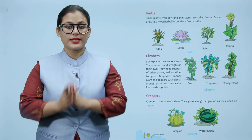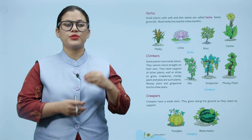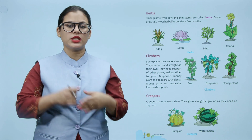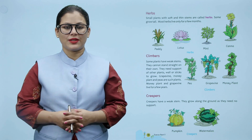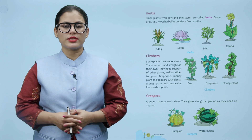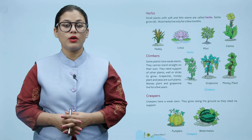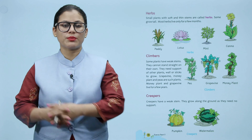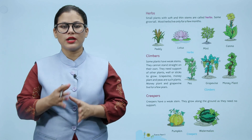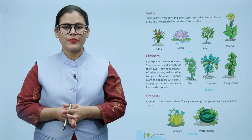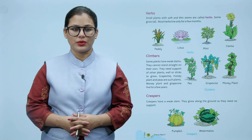Kuch aise plants hote hain jinki weak stem hoti hai. Yeh seedha khade nahi ho paate, isliye inhe support ki zaroorat hoti hai — ya doosre plant ki, ya wall ki, ya stick ki. Inhe climbers kehte hain. Creepers ki bhi weak stem hoti hai, aur yeh ground ke saath-saath grow karte hain. Inhe kisi bhi support ki zaroorat nahi hoti.